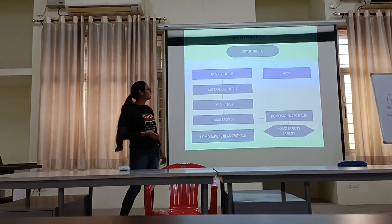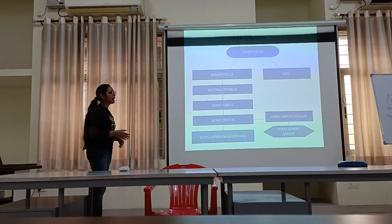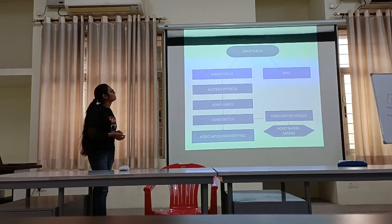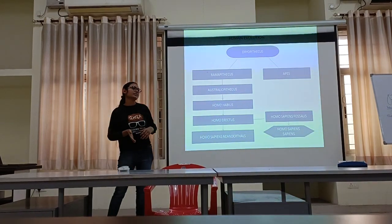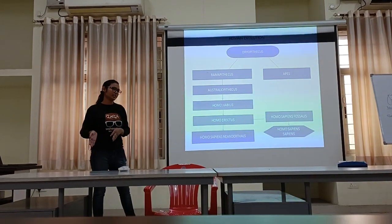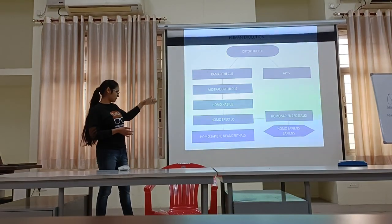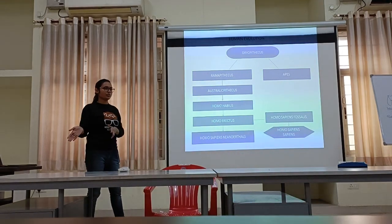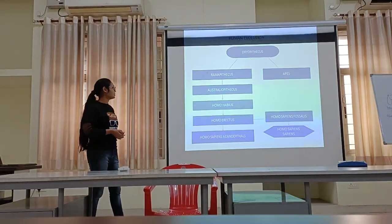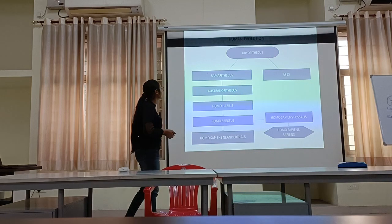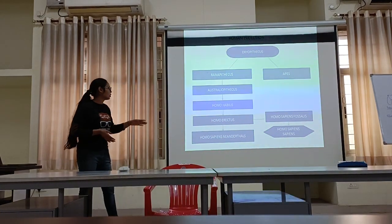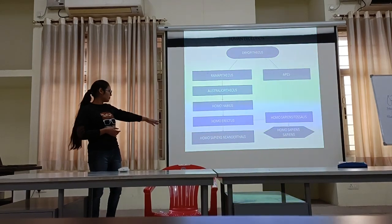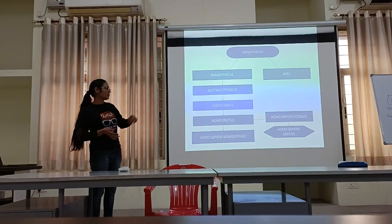Now here is something interesting: human evolution — how we evolved. We have evolved from the common ancestor, Dryopithecus, who is the common ancestor of apes and modern-age humans. Some of the species from Dryopithecus to modern-age humans include Ramapithecus, Australopithecus, Homo habilis, Homo erectus, Homo sapiens neanderthalensis, and Homo sapiens fossilis.